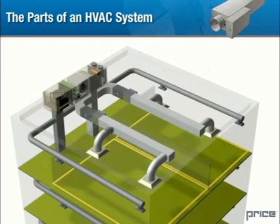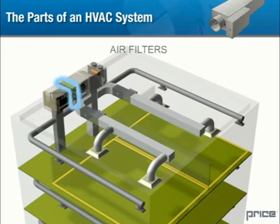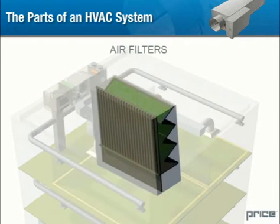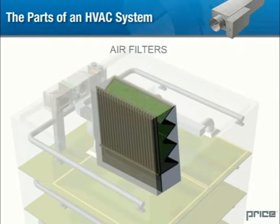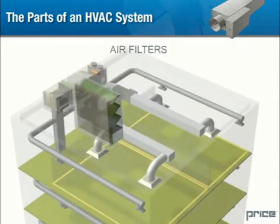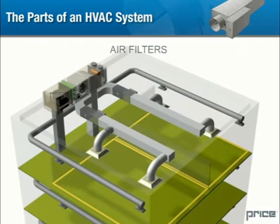Air filters. Depending on the requirements of the occupants and the activities in the building, various grades of air filters are used in the system. General purpose air filters will be included in the air handler itself, while more sophisticated filters, such as HEPA filters, may be used in the downstream ductwork.